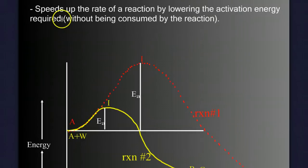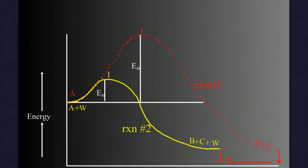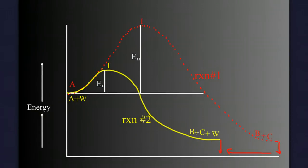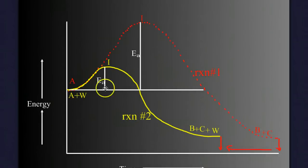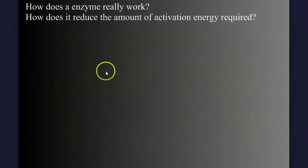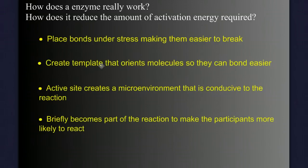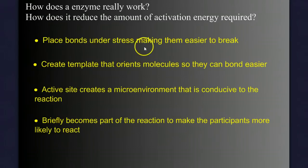So we've answered what an enzyme does, speeds up the rate of reaction by lowering the amount of activation energy required so we finish the reaction earlier. And we have learned four rules that we need to remember about how enzymes behave, but we still have one big question to answer, and that is how does it do this job? How does an enzyme lower the amount of activation energy we need? It turns out there are four ways. We're going to look at each of those. Enzymes can place bonds under stress, making them easier to break. They can create a template that orients molecules so they can bond easier. The active site of the enzyme could create a microenvironment that's more conducive to the reaction. And the enzyme can briefly become part of the reaction to make the participants more likely to react or more reactive. Let's look at each of those individually.